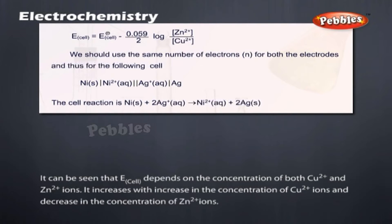It can be seen that E cell depends on the concentration of both Cu2+ and Zn2+ ions. It increases with increase in the concentration of Cu2+ ions and decrease in the concentration of Zn2+ ions.